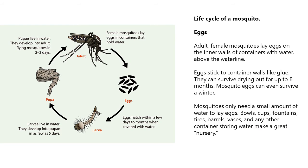Life cycle of a mosquito — Eggs: Adult female mosquitoes lay eggs on the inner walls of containers with water, above the waterline. Eggs stick to container walls like glue and can survive drying out for up to 8 months, even surviving a winter. Mosquitoes only need a small amount of water to lay eggs — bowls, cups, fountains, tires, barrels, vases, and any other container storing water make a great nursery.